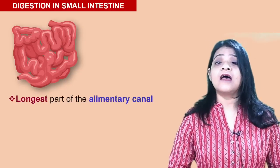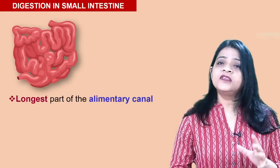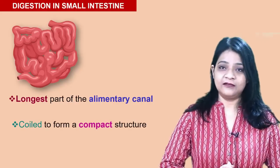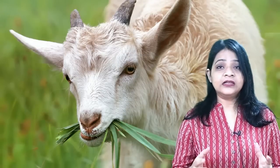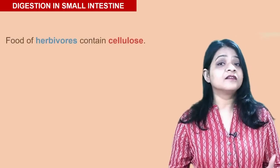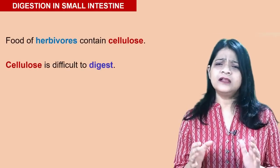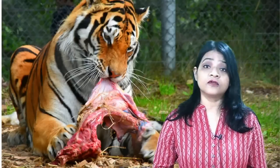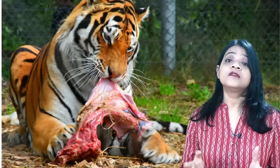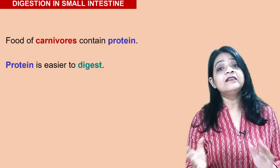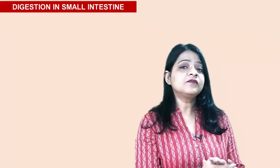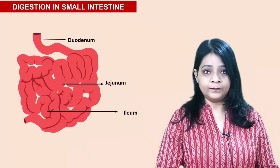The food now travels to the small intestine. The small intestine is the longest part of the alimentary canal, which is coiled in order to make it compact. The length of the small intestine differs in different animals. Herbivores eat plants or grass, which contain cellulose — cellulose is a little bit difficult to digest. Carnivores eat meat, which is a type of protein and is comparatively easier to digest. For this reason, herbivores have a longer small intestine compared to carnivores.